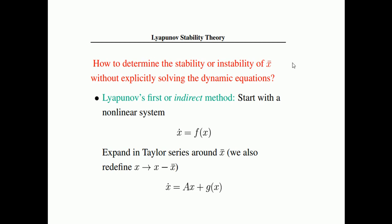Now, how do we determine the stability or instability of x-bar without explicitly solving the dynamic equations? There are two Lyapunov criteria: the first method, also called the indirect method, and the second criterion, also called the direct method. These are for nonlinear systems, since for linear systems we have a straightforward method.